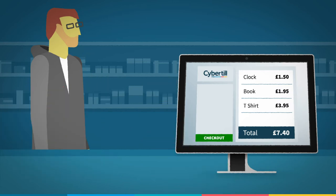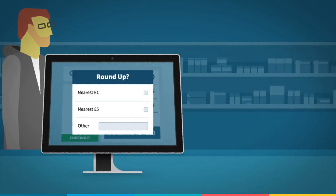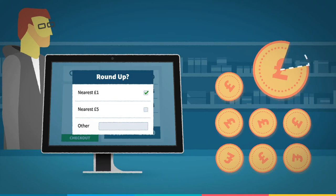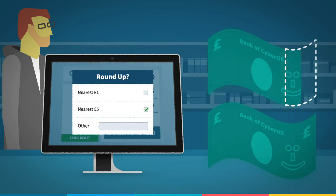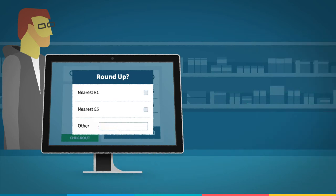You're in control. Give your customers the choice to round up to the nearest pound, five pounds, ten pounds, or more. There's also an open option, meaning that customers can choose any amount they want to donate.